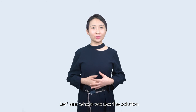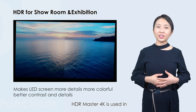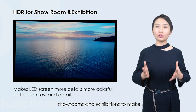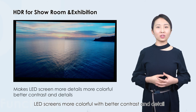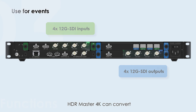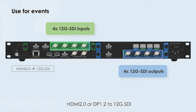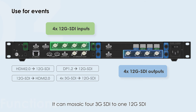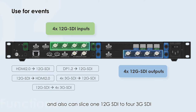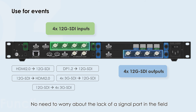Let's see where we use the solution. HDR Master 4K is used in showrooms and exhibitions to make LED screens more colorful with better contrast and detail. HDR Master 4K can convert HDMI 2.0 or DP 1.2 to 12G SDI and convert 12G SDI to HDMI 2.0. It can mosaic 4x 3G SDI to 1x 12G SDI and also can slice 1x 12G SDI to 4x 3G SDI. No need to worry about the lack of a signal port in the field.